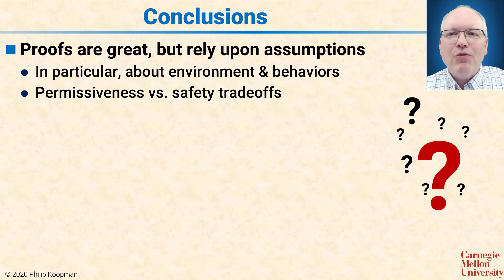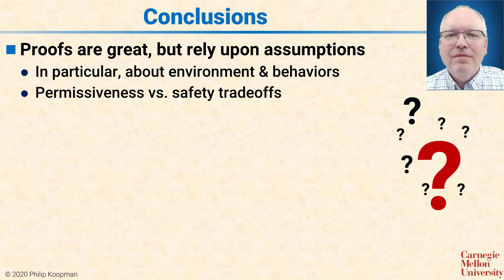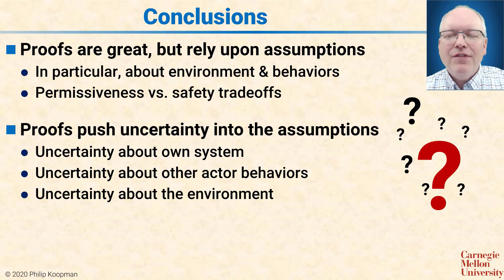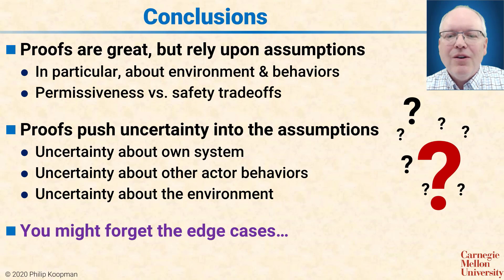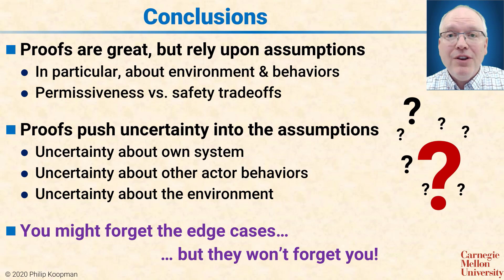In conclusion, proofs are great but you have to rely on some assumptions — in particular about the environment and behaviors, and that you know what's actually going on, resulting in permissiveness versus safety trade-offs. If you have proofs of safety you can say you're proven safe under some assumptions, but the thing to look out for is to make sure you're not sweeping too much uncertainty about your own system, about other actors, and about the environment into those assumptions. At some point those assumptions are going to be an issue — or as I like to say, you might forget about the edge cases but they won't forget about you.